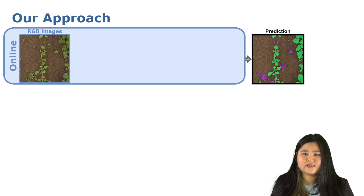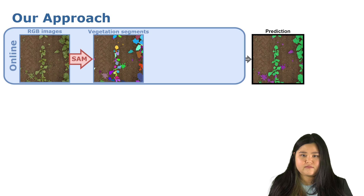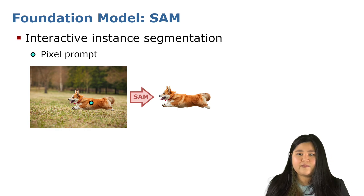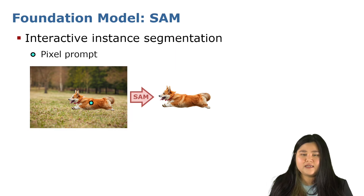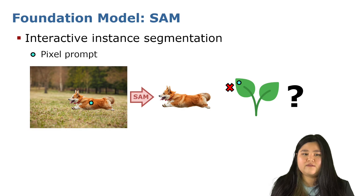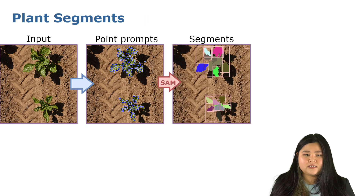So now let's take a look at how our approach works in more detail. As we're performing crop-weed segmentation, we take in as input an RGB image and output the prediction of a crop-weed semantic segmentation. The first step of our approach is to separate the soil from the vegetation — specifically, we segment out the vegetation segments in the image. We do this by leveraging the foundation model SAM, or Segment Anything Model, which performs interactive instance segmentation. SAM takes in as input a pixel prompt as well as an RGB image, and outputs the instance that lies on that pixel prompt. We place pixel prompts on the vegetation segments, being careful not to place any prompts on non-vegetation or on the soil, largely by leveraging the idea that plants are green. From all these pixel prompts, we feed into SAM to obtain the SAM segments.